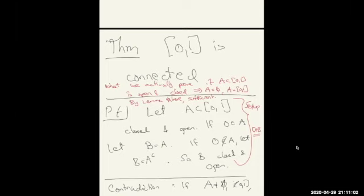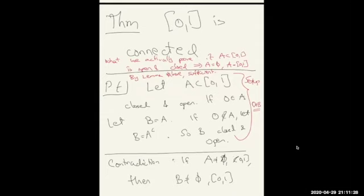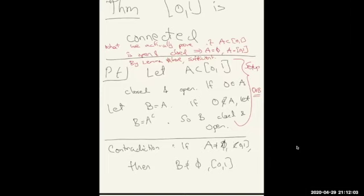What we actually prove is: if a subset A of [0,1] is open and closed, then A is either empty or the full set, and by the lemma this is sufficient. The open-and-closed logic is often how you use connectivity. We start from a subset A assumed to be closed and open. There are two cases: either 0 is in A, in which case we work with A, or if 0 is not in A we consider the complement B — which is also open and closed — and 0 is in B.